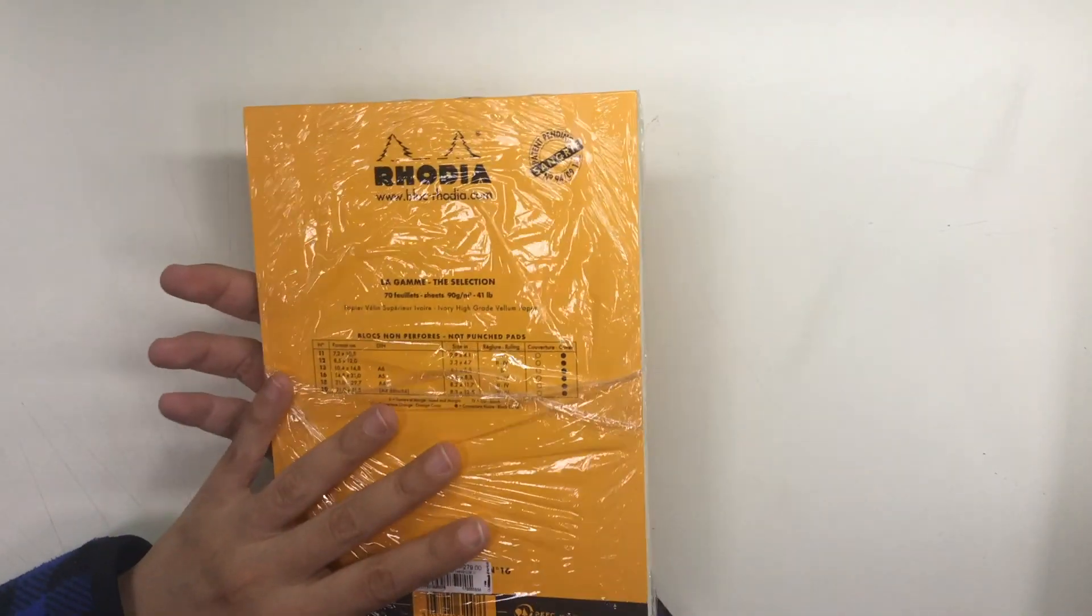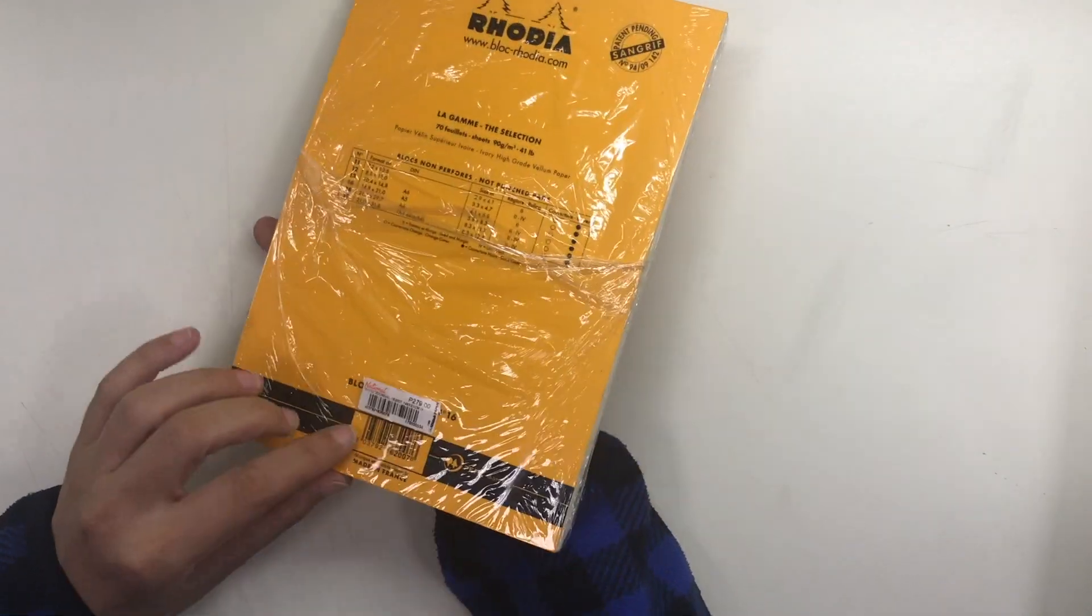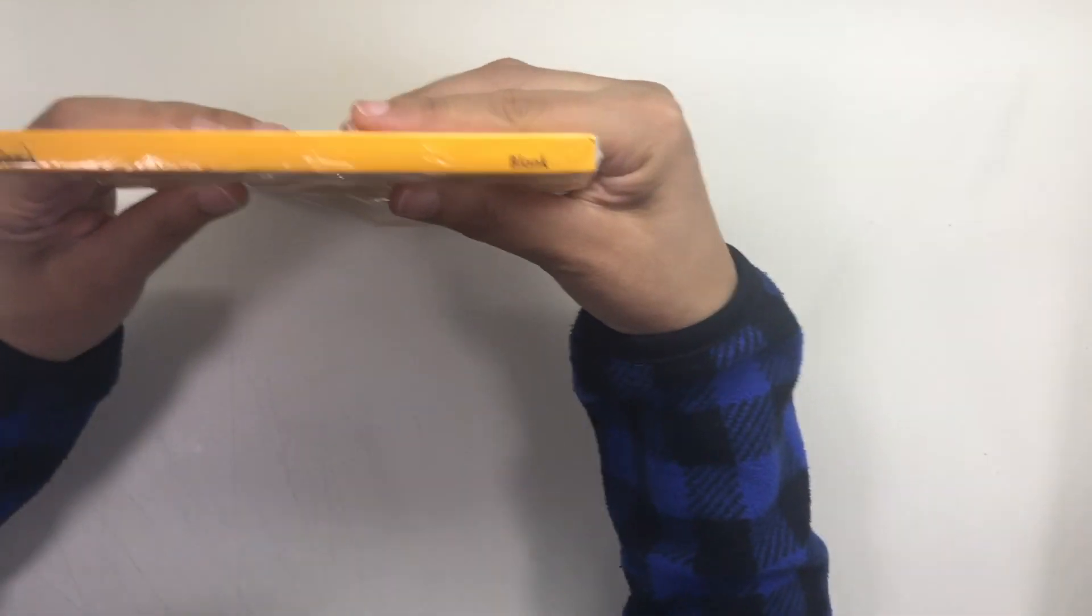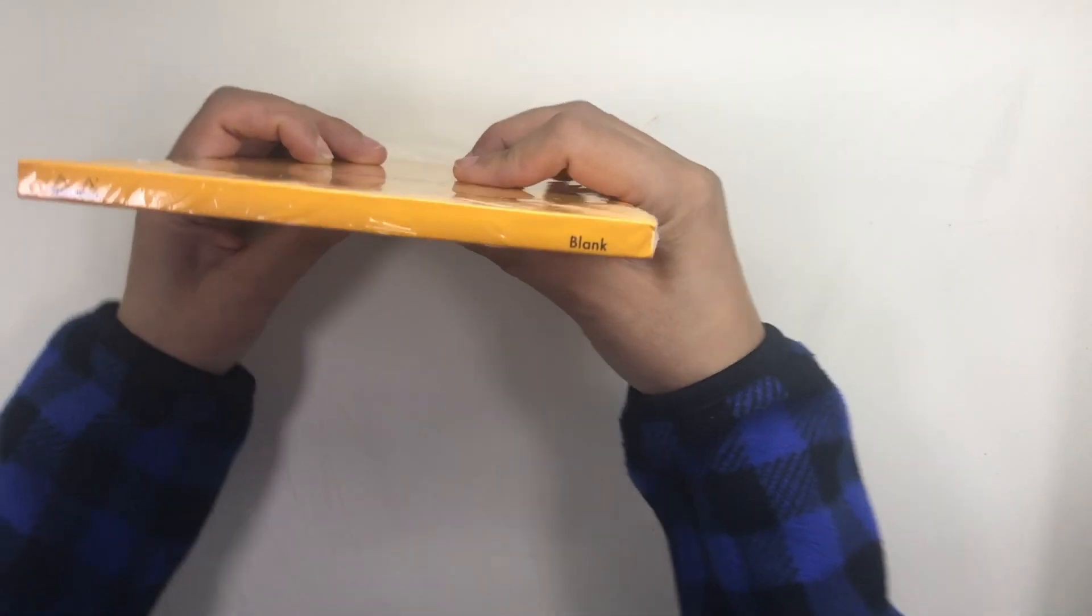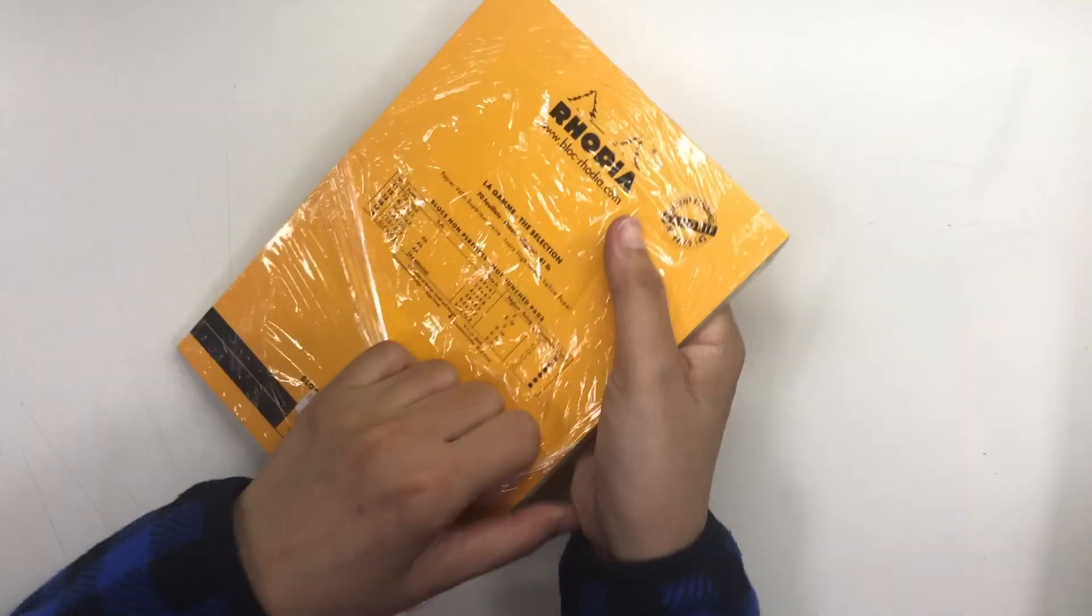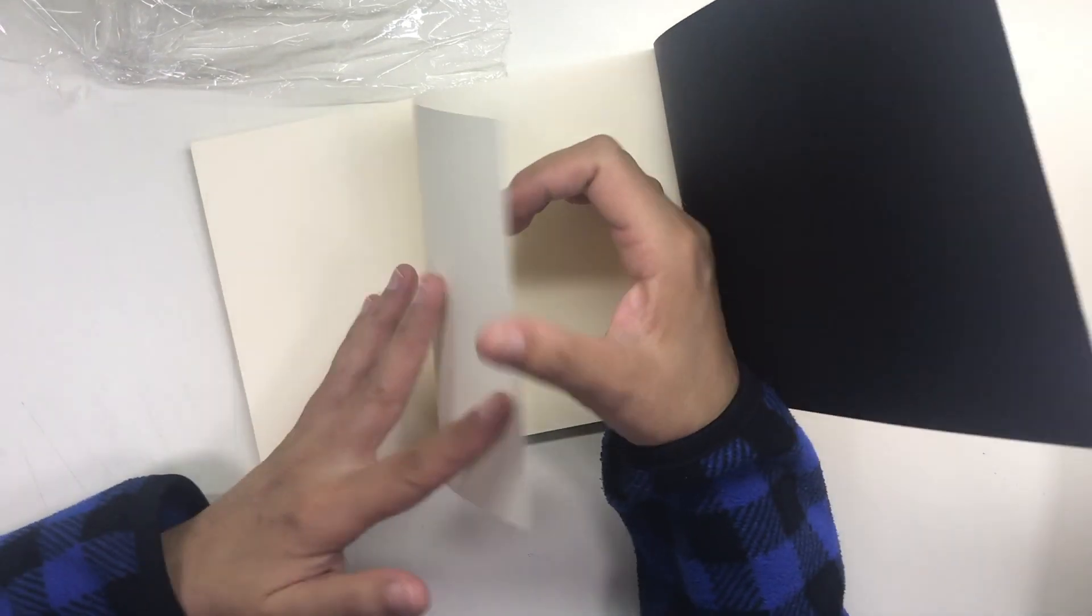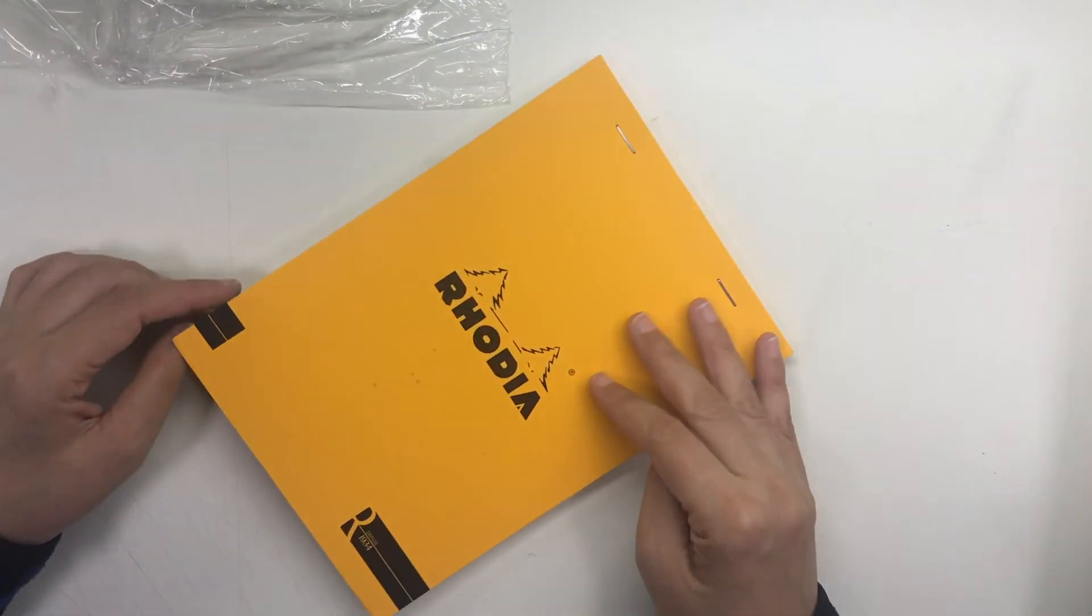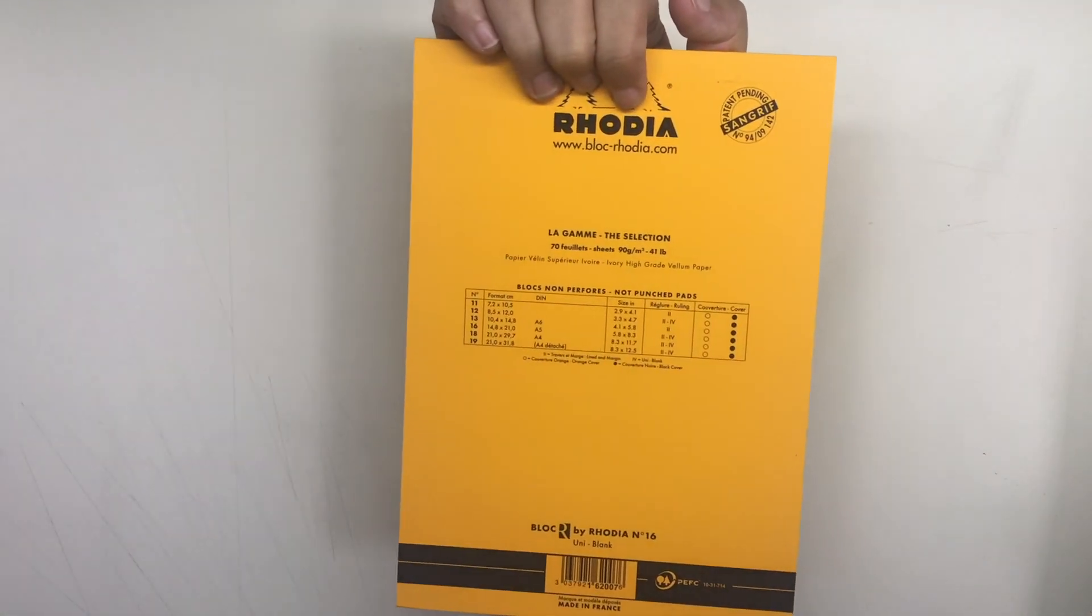Another paper that I have considered is the Rodia. This costs 279 pesos from National Bookstore. It's the blank A5 pad in cream. The label says it has 70 sheets. I do like the color of this. The cream is deeper and warmer than the cream color of the Midori MD paper pad.